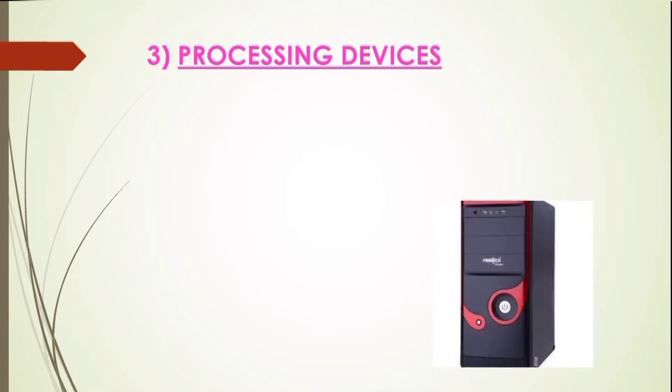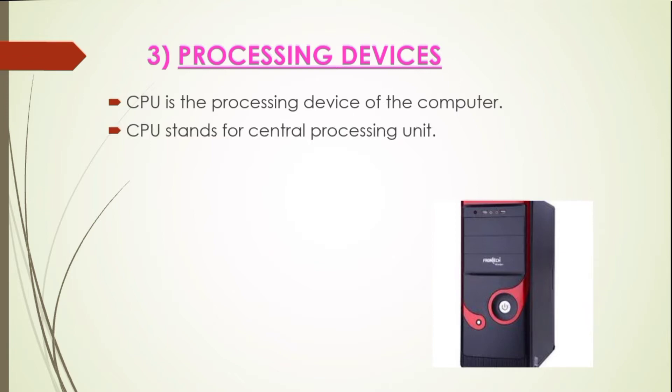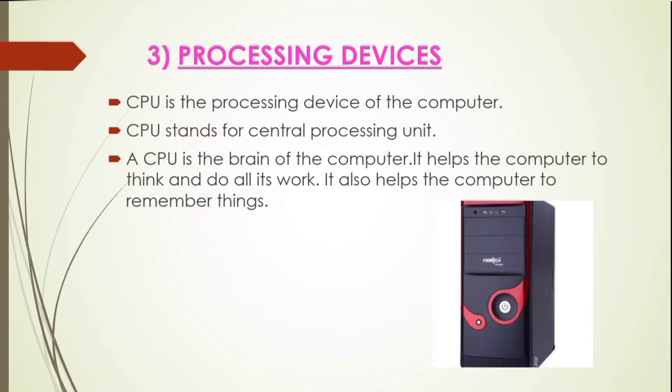Hi students, it's me Reshna. In this section we are discussing about the processing devices and the storage devices. First we can discuss about the processing devices. CPU is the processing device of the computer. CPU stands for Central Processing Unit. A CPU is the brain of the computer — it helps the computer to think and to do all its work.